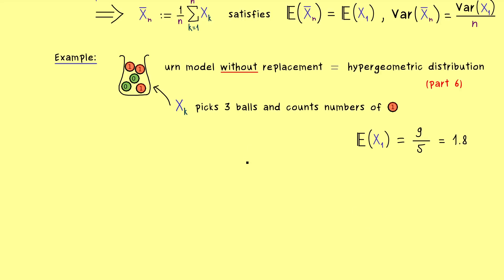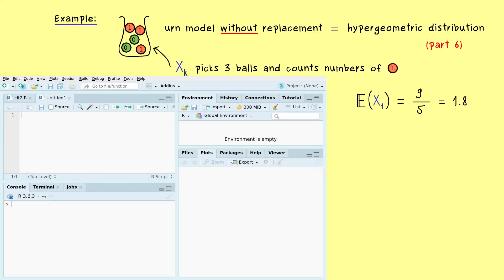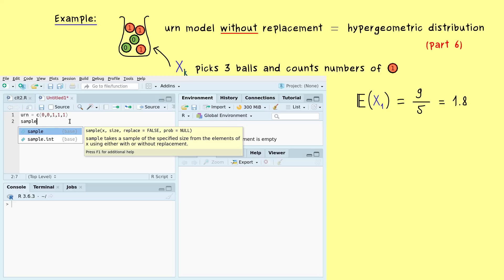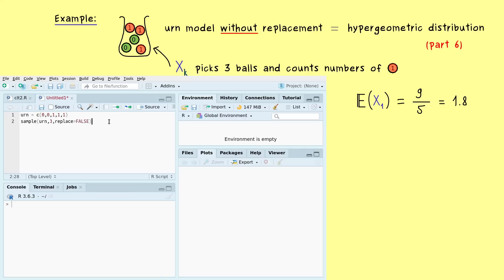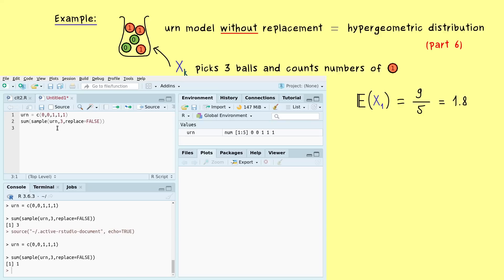To get an idea of the important central limit theorem, we can simulate this urn model in R. The first thing is that we can put in the urn as a vector with five components. Now one sample of the random variable can simply be simulated with the sample command — so we have urn, 3, and replacement set to false. You see this is our pick: we have the numbers 1, 0, and 1. But remember, we want to count the number of balls with 1, so we can just use the sum command to add up all the balls. By running the script, you see we get different samples: 1, 2, 1, 1, or even 3. This just simulates one random variable xk. But actually we want to do the whole thing n times, sum it up and divide by n.